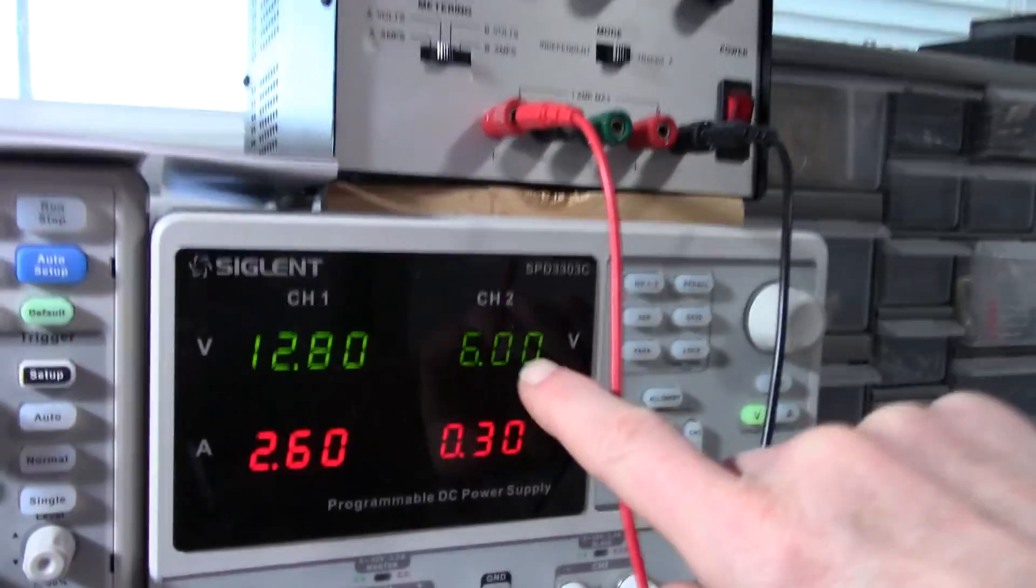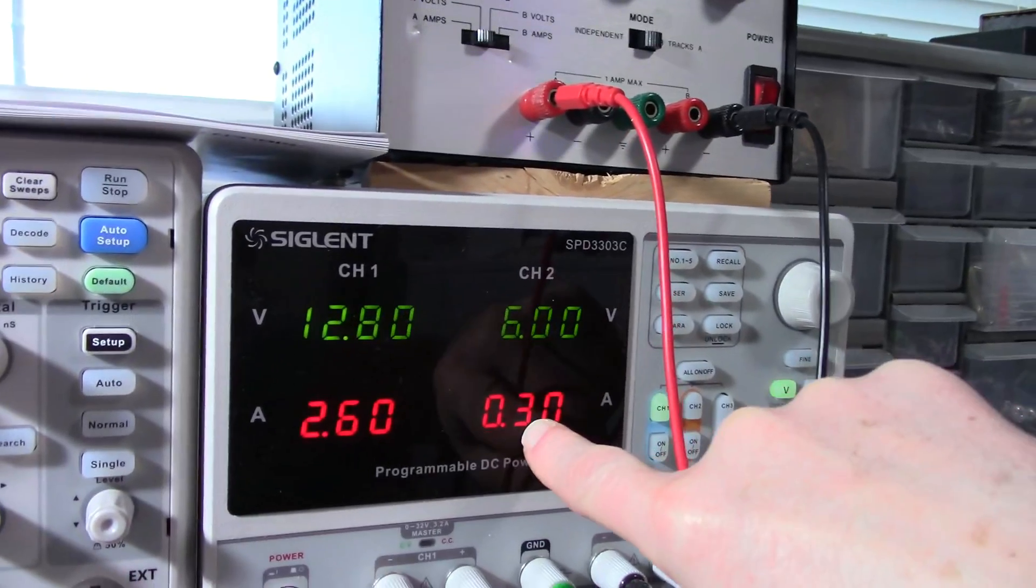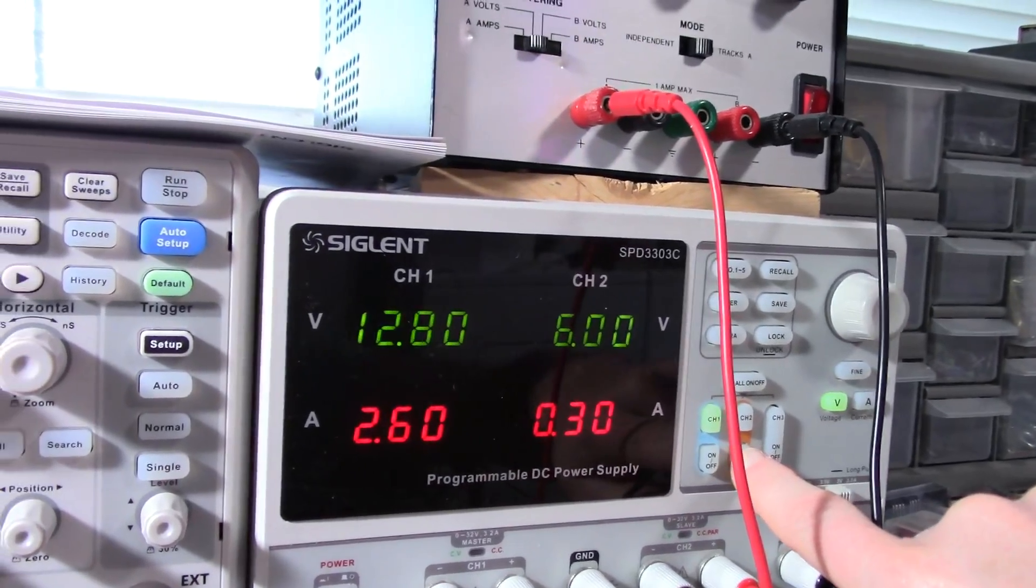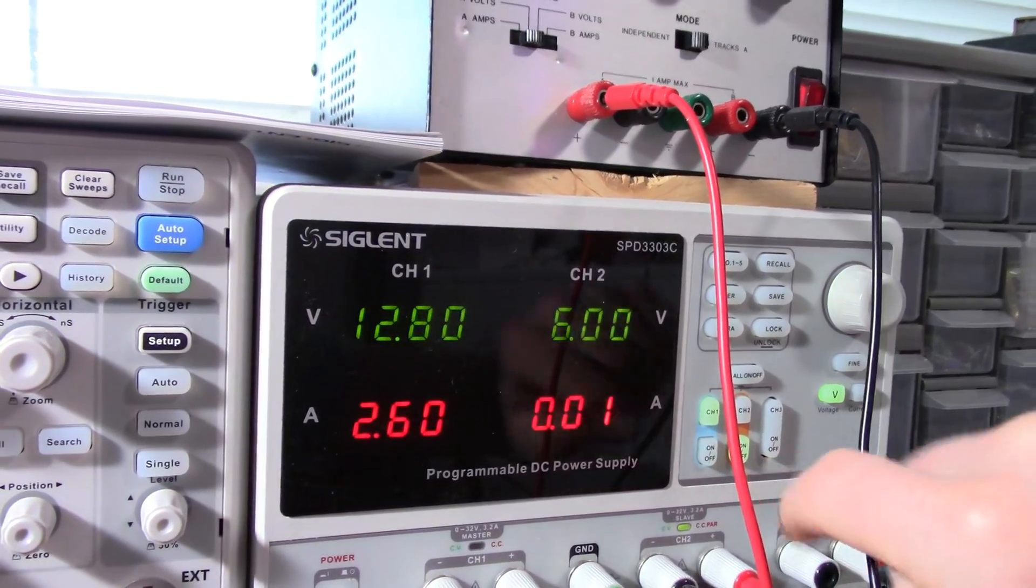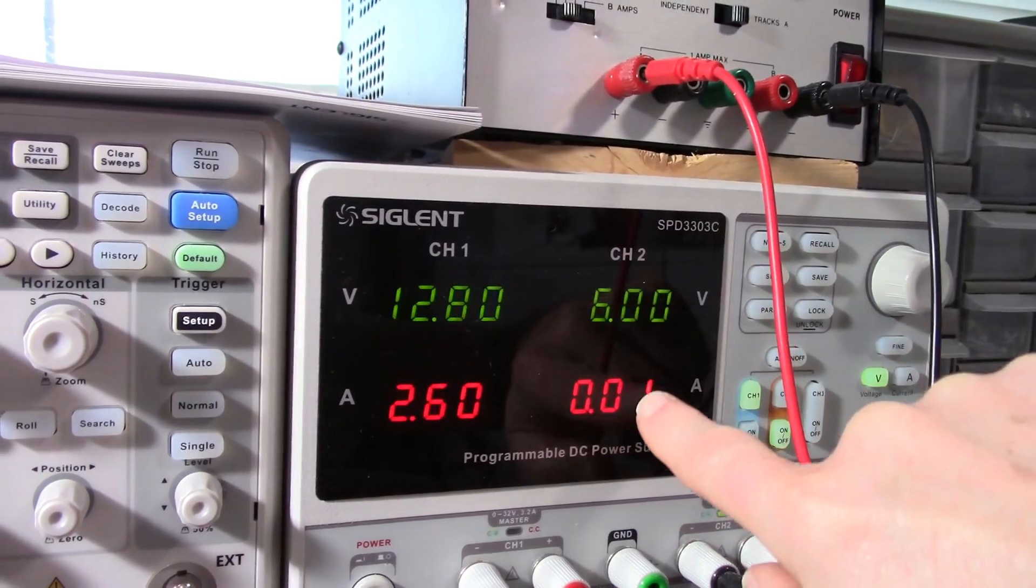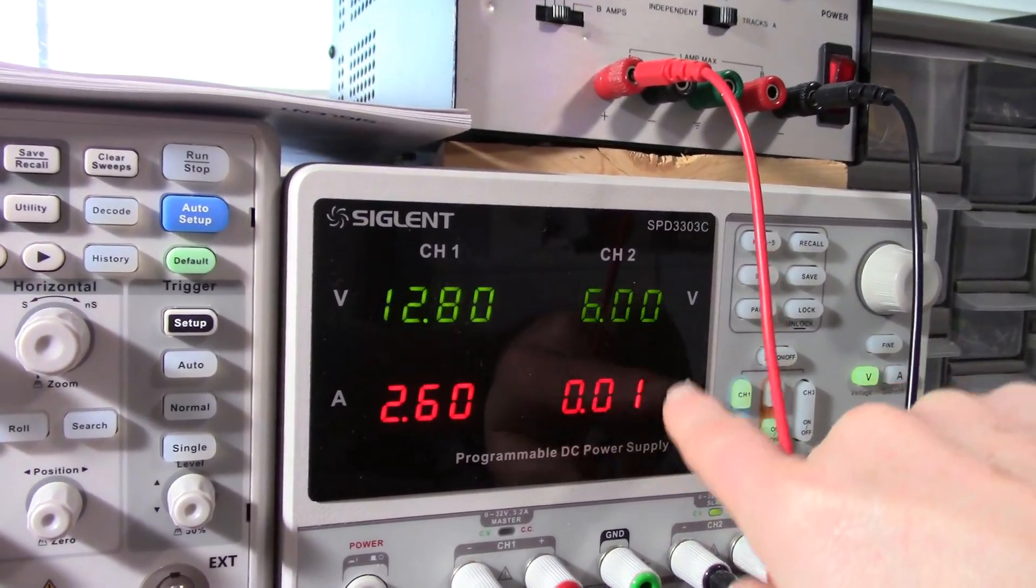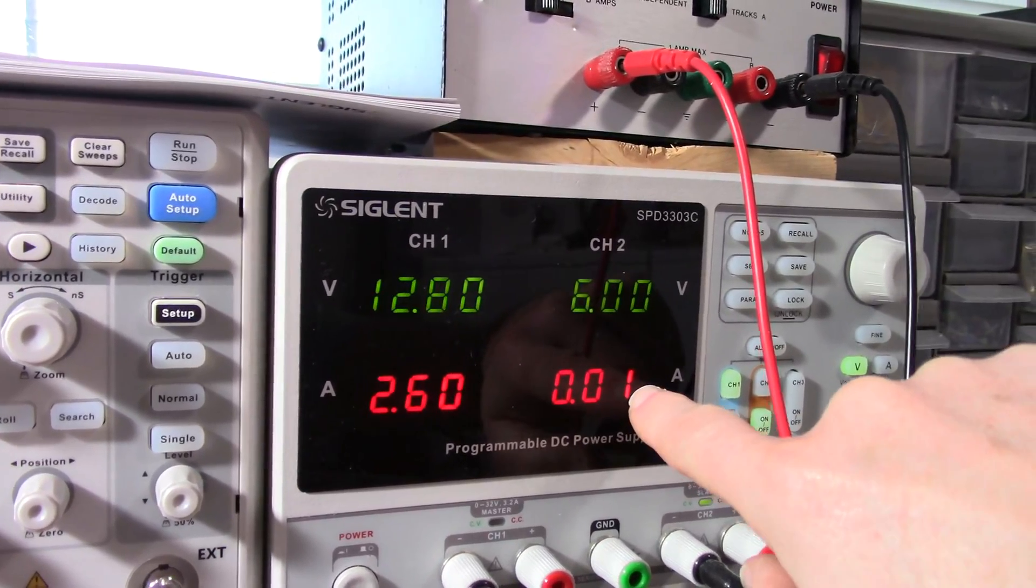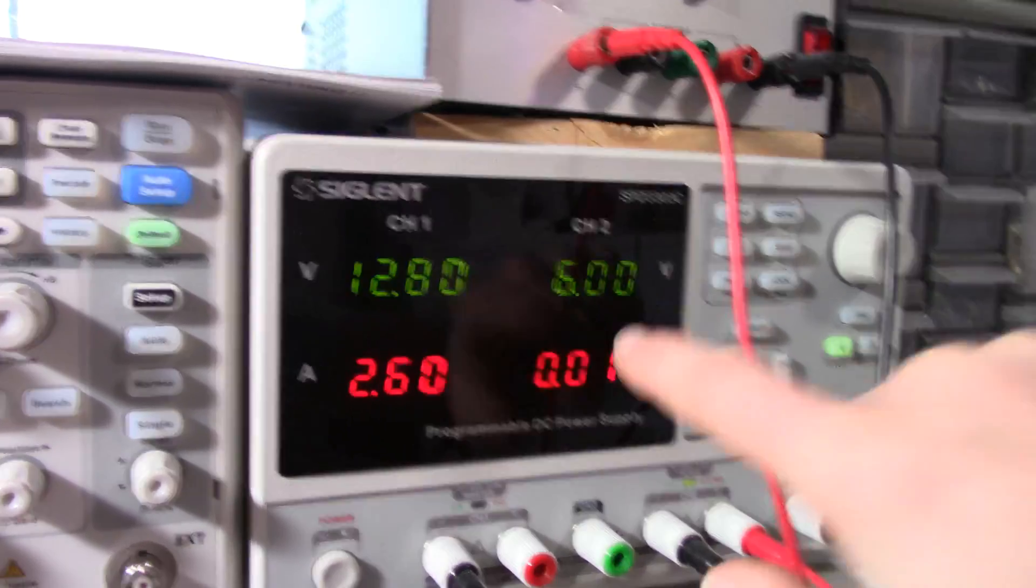I have channel two on the supply set up for six volts. Current limited at 300 milliamps, just in case there's a problem. Turn it on. I heard a little thump on the speaker. And it's drawing only 10 milliamps. I mean, the resolution, it's not really high on the supply. But it's 10 milliamps, give or take.